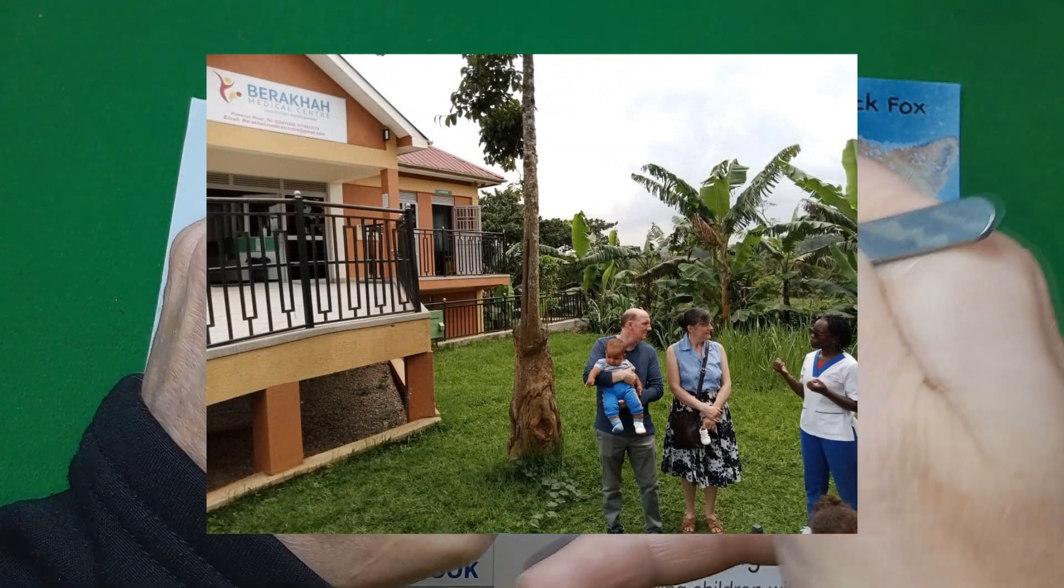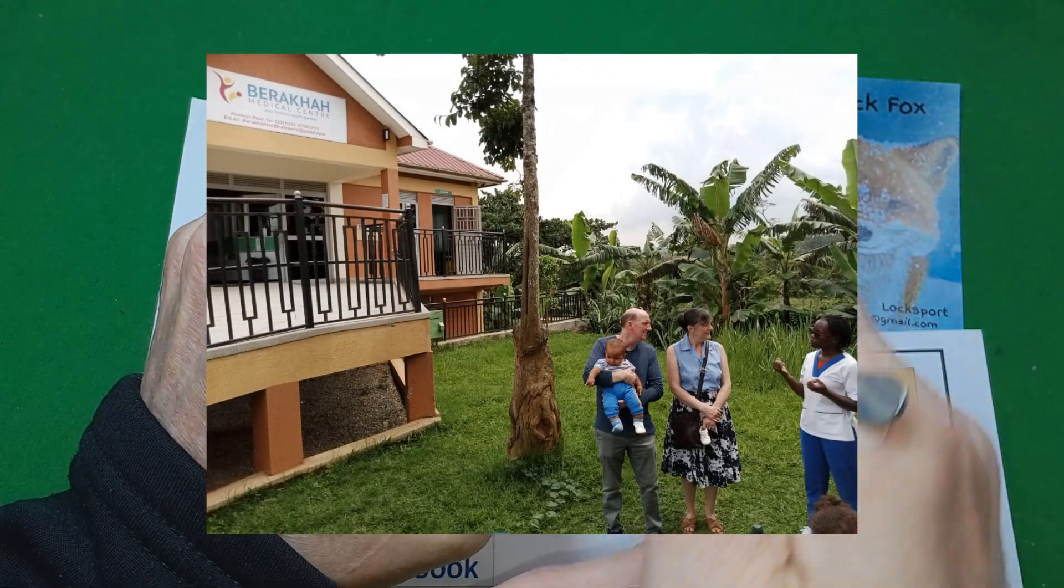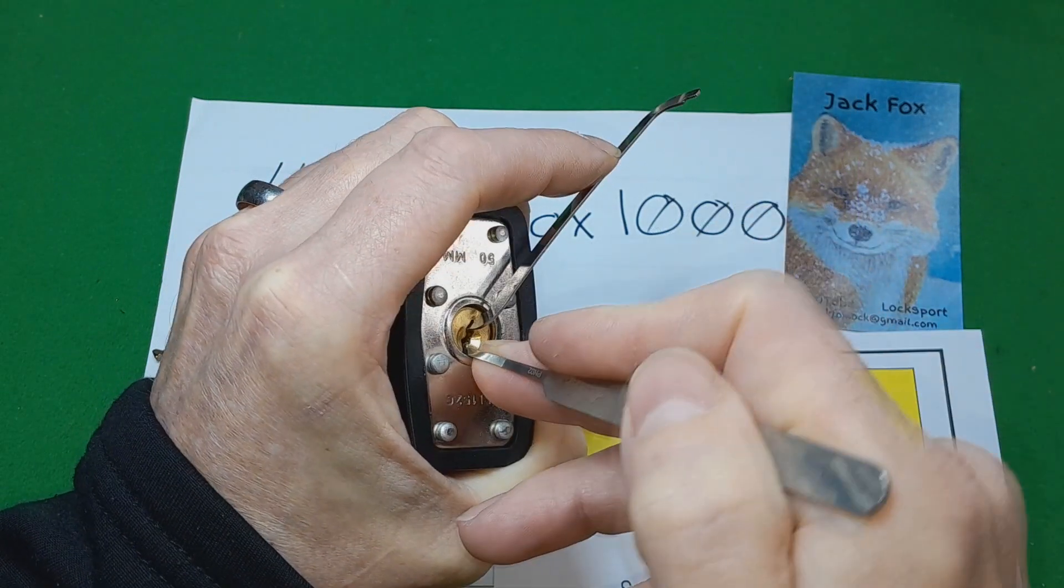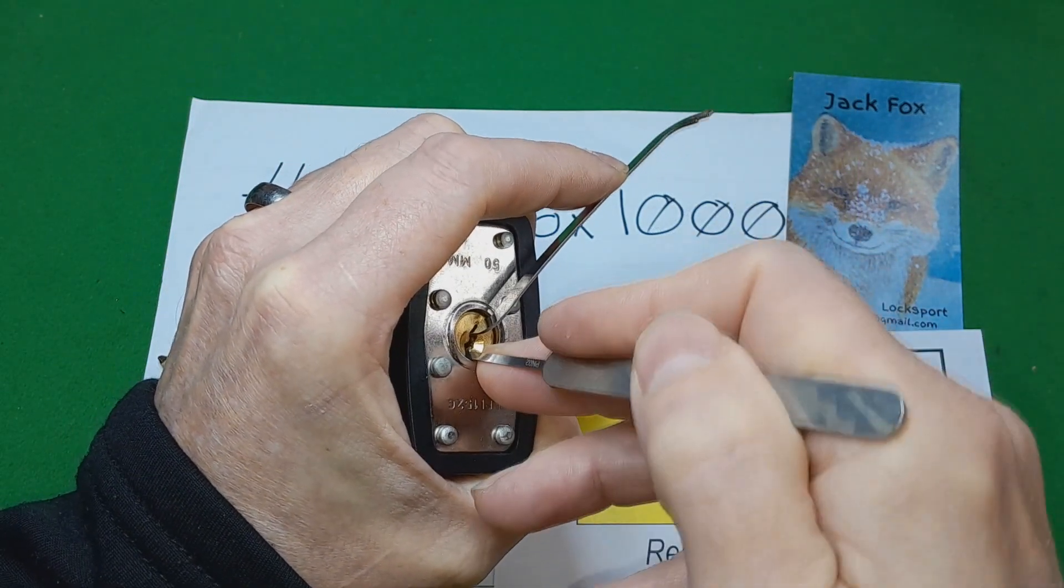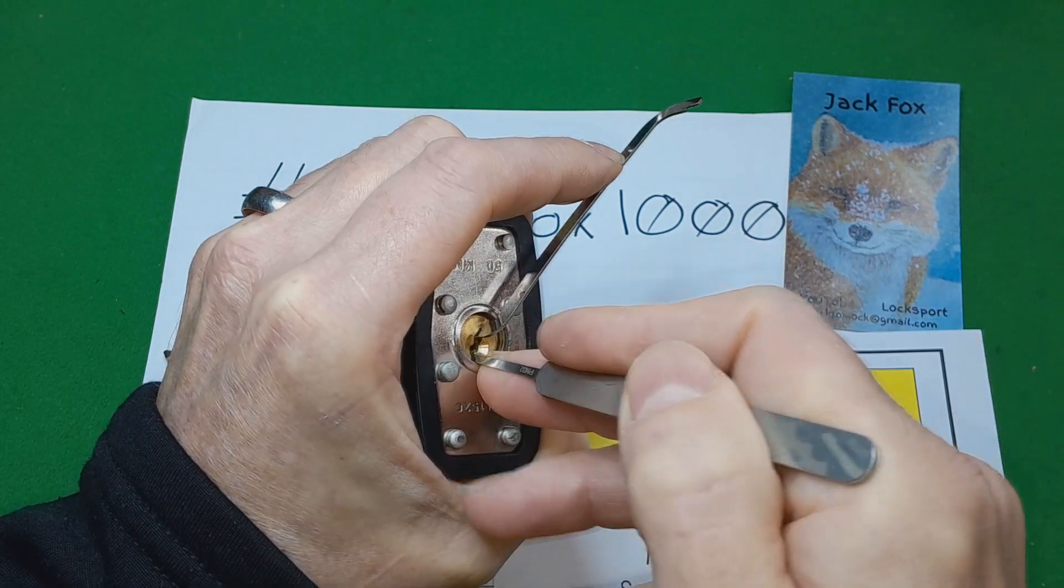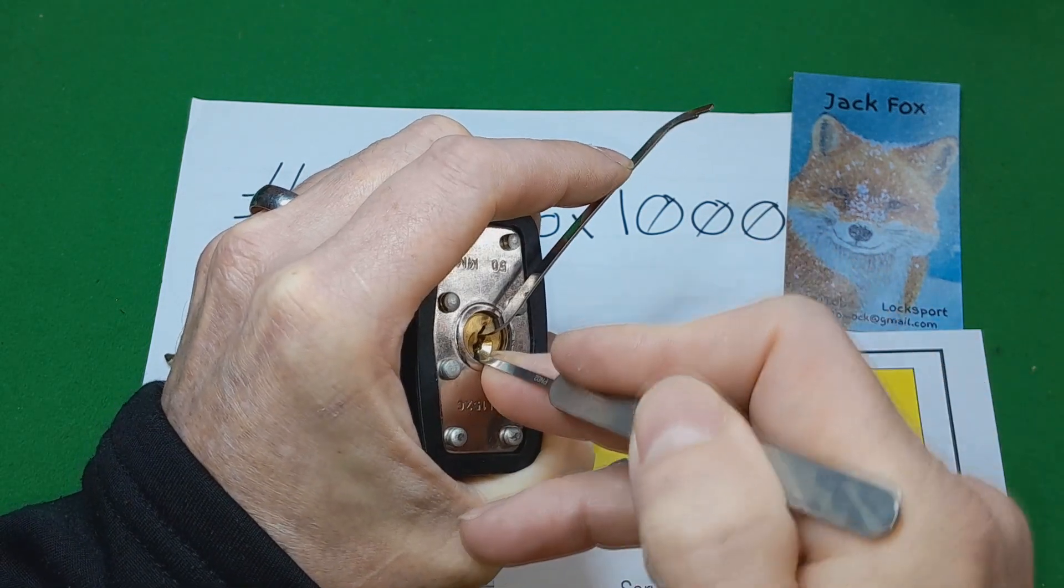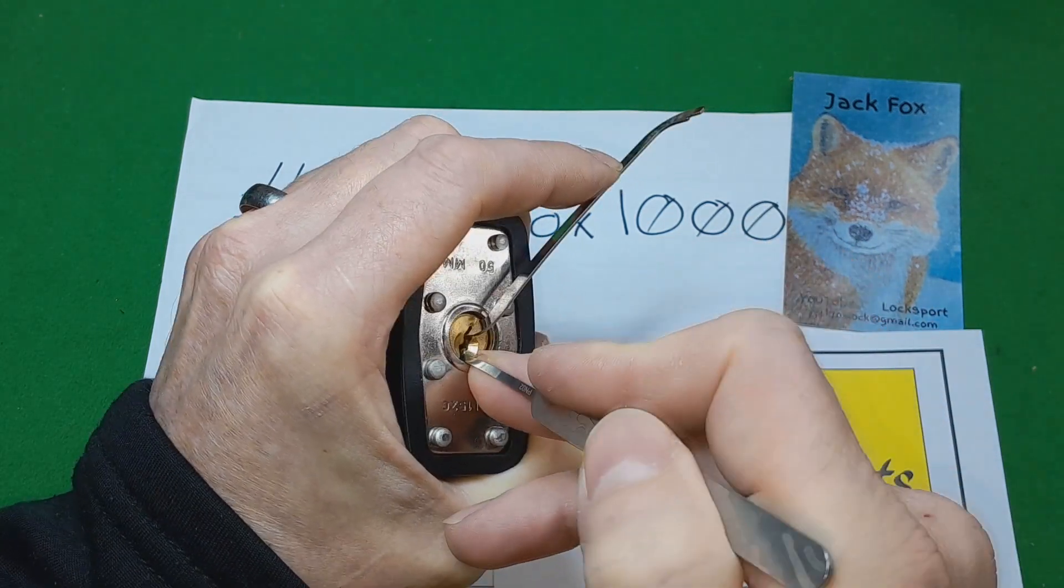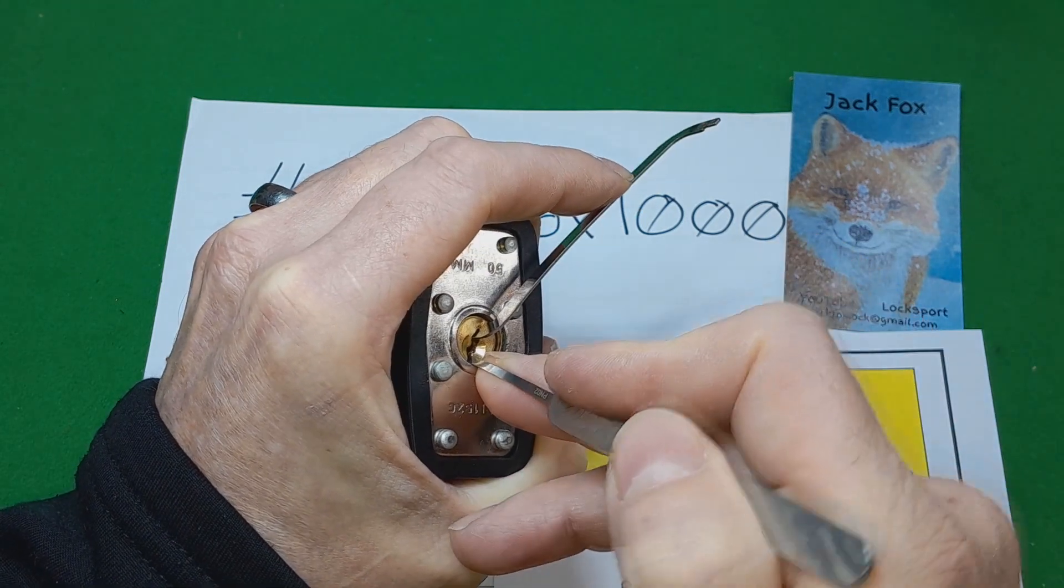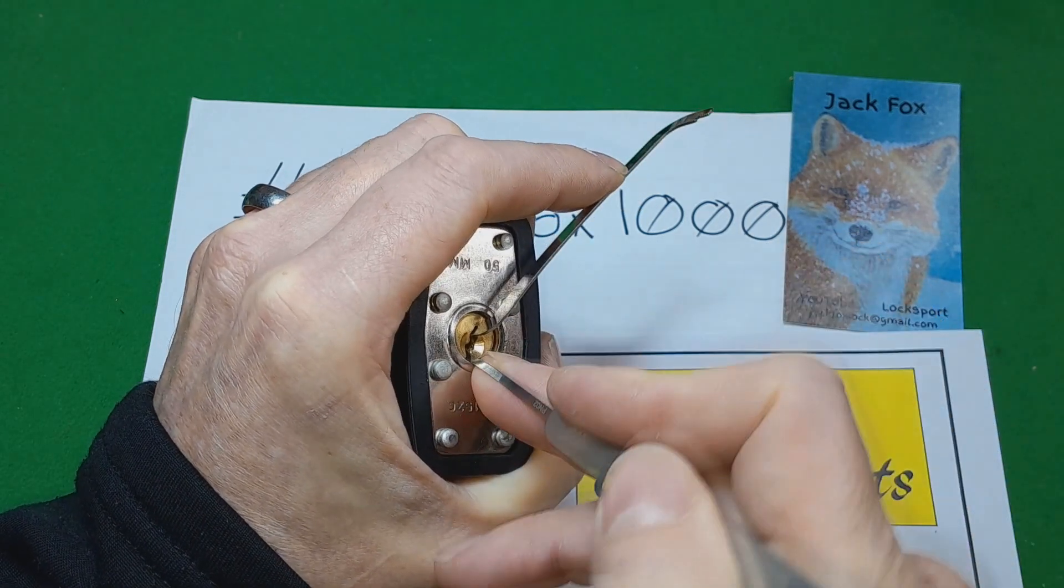All three of those places are in and around Kampala, apart from Busi Island, which is obviously on Lake Victoria at the bottom end of Kampala. My interest is that my daughter works for them.